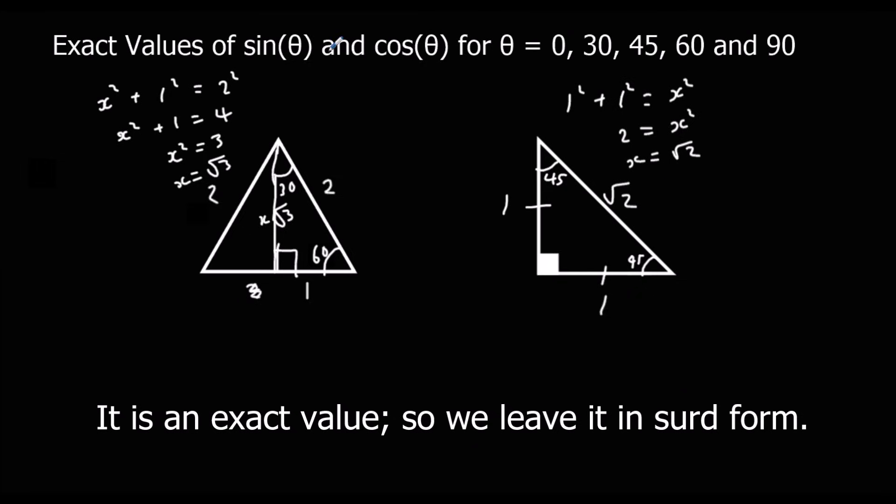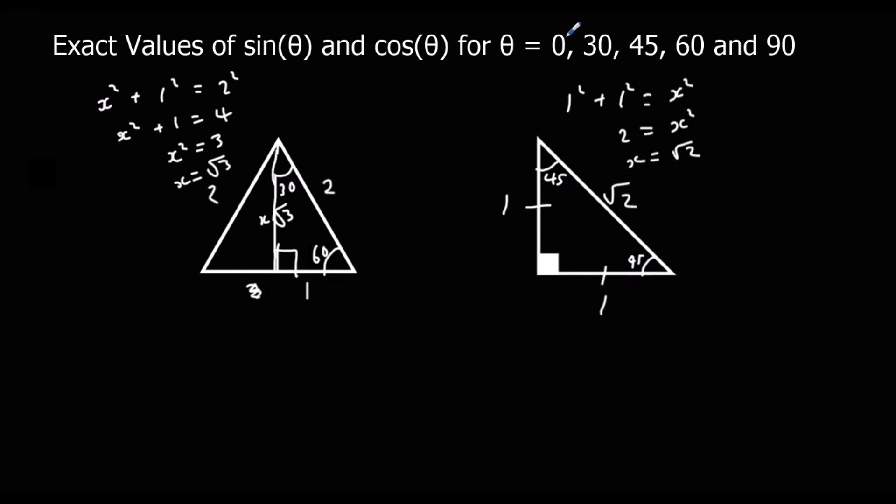And then from these we can work out any values of sin and cos for 30, 45, and 60. So if we look at this angle here, 30 degrees.